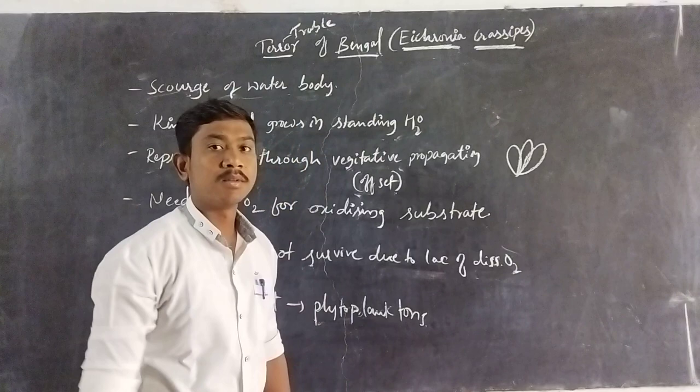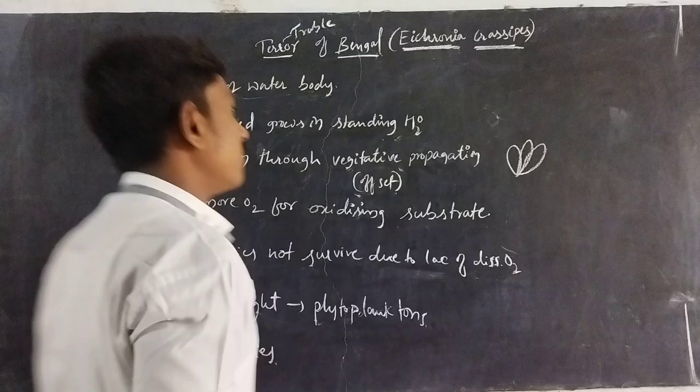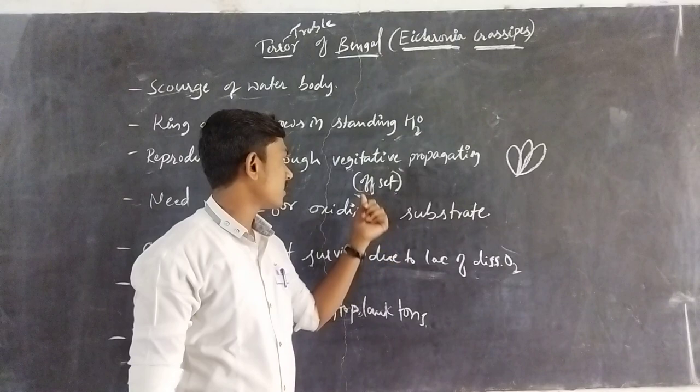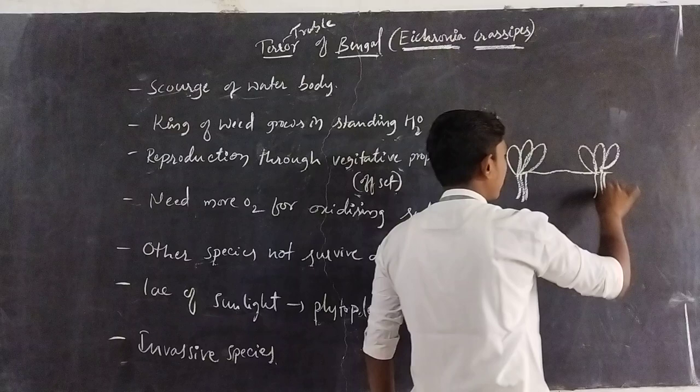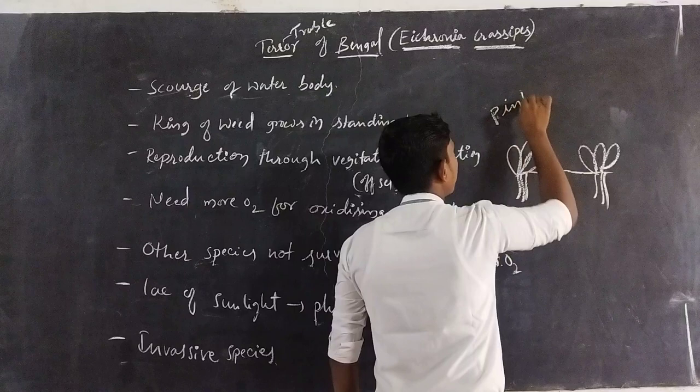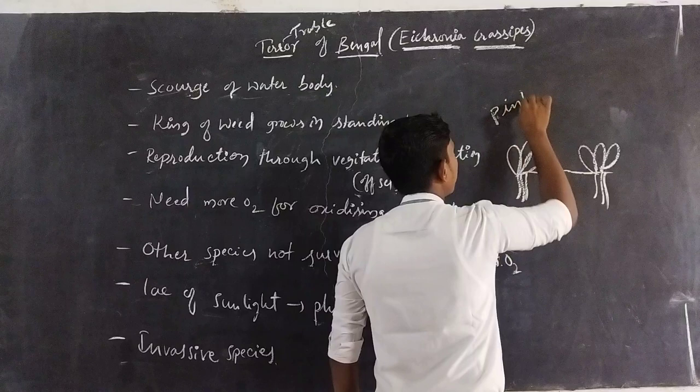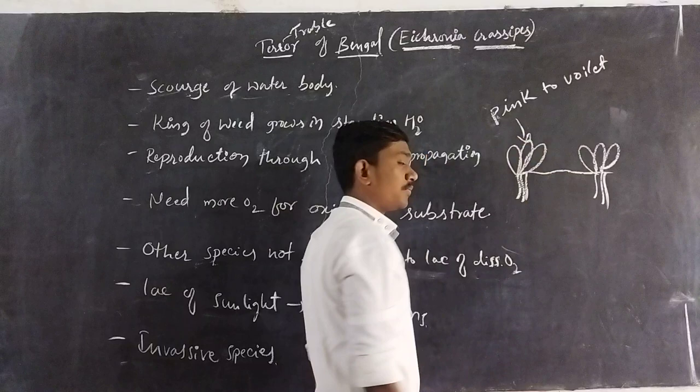In the last session we discussed the reproduction of Eichhornia crassipes, that is water hyacinth. These plants have very beautiful curly leaves — not flat like common plants, but slightly curved back. And these plants have beautiful flowers with a pink to violet color.